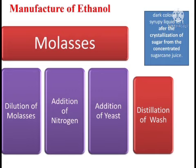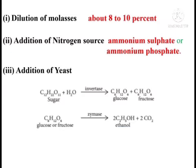The next step is addition of yeast. Yeast contains two enzymes: invertase and zymase. The nitrogen-enhanced diluted sugar solution is involved in the fermentation step. This mixture is kept at about 303 Kelvin for a few days. At that time, sugar is converted into glucose and fructose in the presence of invertase. Next, that glucose or fructose is converted into ethanol in the presence of zymase.